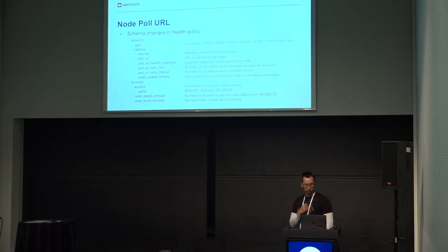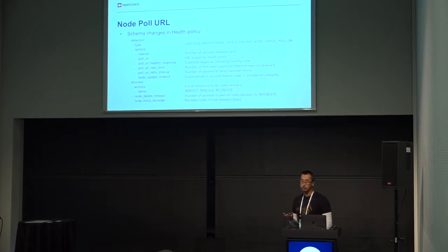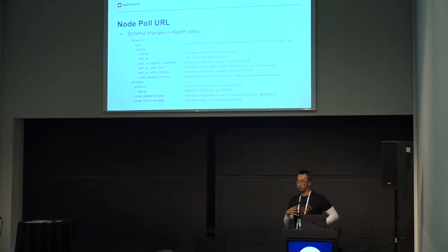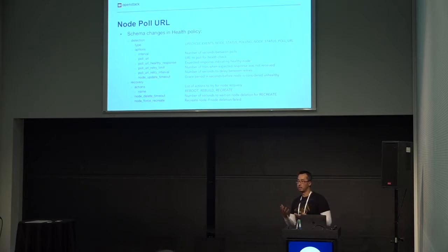We added a retry limit so you can specify how many times to retry before the node is considered unhealthy. We have the retry interval, and finally, we have a node update timeout. That's an important one — it gives the node or VM a grace period to start up before the URL endpoint is ready when doing a recovery.